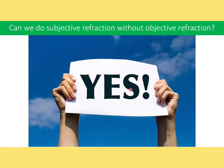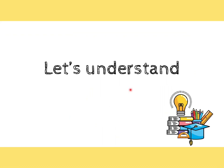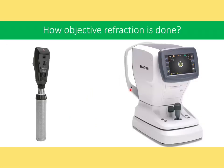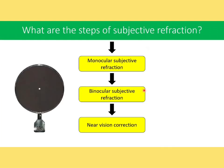Can we do subjective refraction without objective refraction? The answer is yes. Objective refraction is done using a retinoscope or autorefractometer. While doing retinoscopy, you give the patient the largest optotype at six meter distance so accommodation is at rest. You can also use an autorefractometer, but my personal advice is: don't be overly dependent on it — focus on improving your retinoscopy skill, as that will help you in the long run.